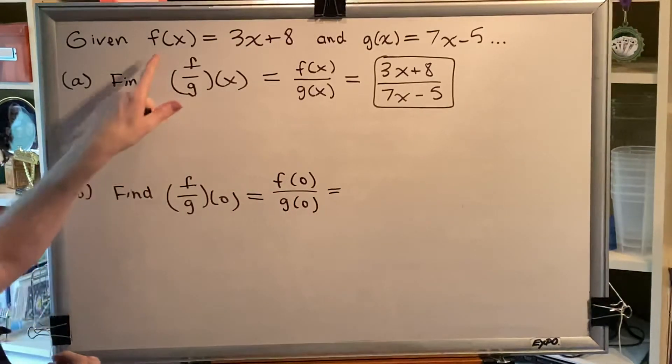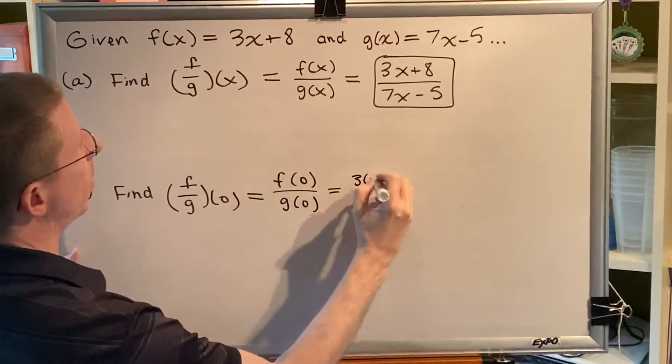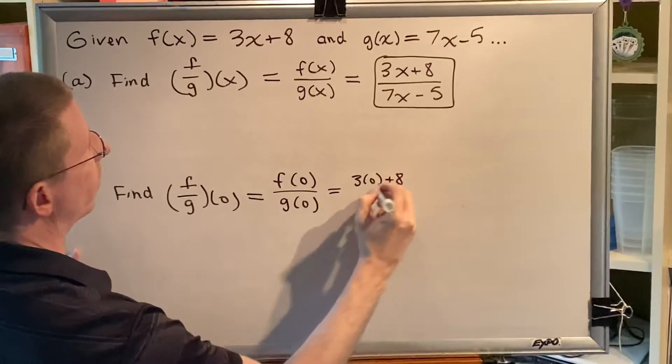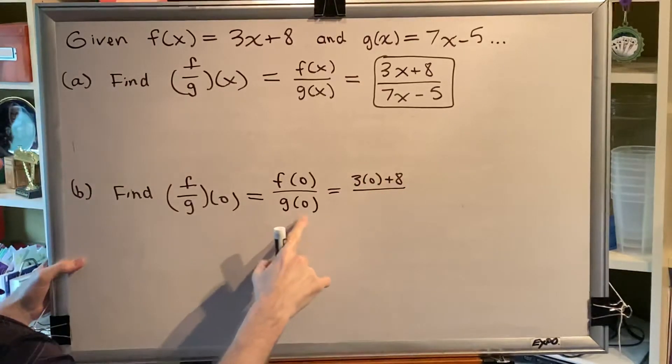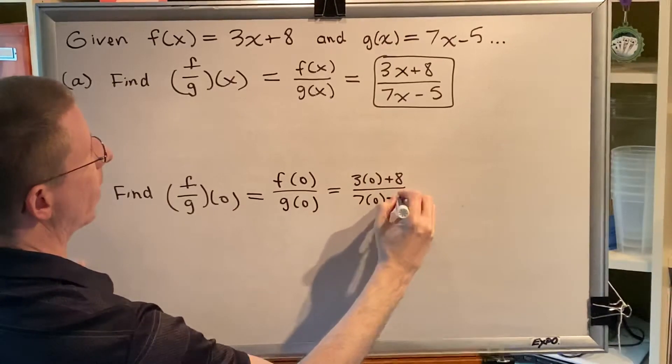If f(x) is 3x + 8 then f(0) must be 3 times 0 plus 8. Similarly g(0), plug a 0 in right here, would be 7 times 0 subtract 5.